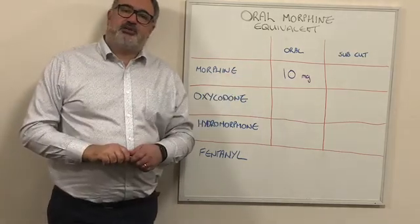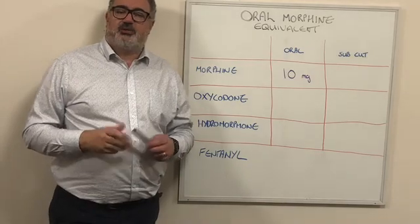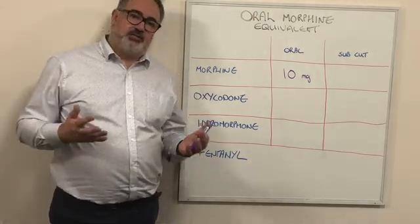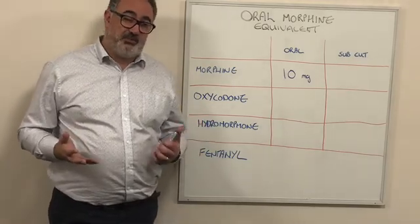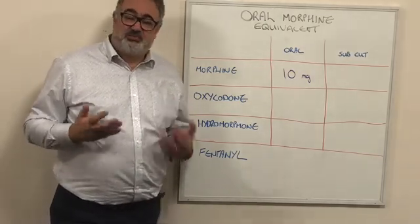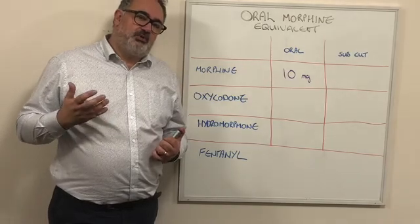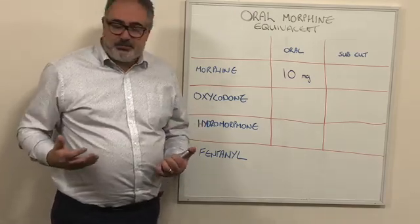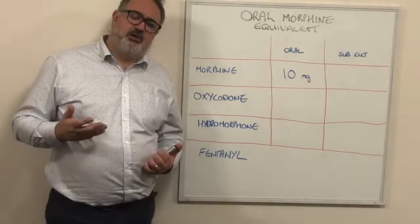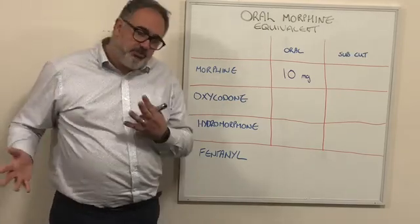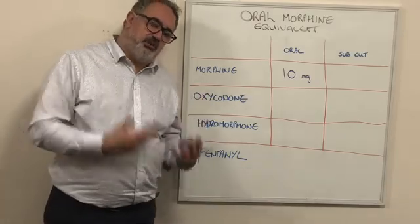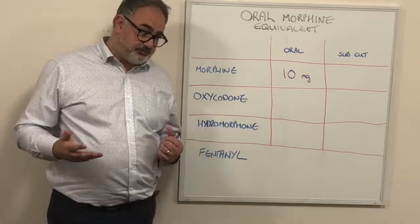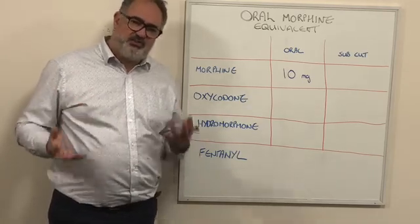Welcome to another short clip of palliative education. Today we're going to be talking about opioid conversion ratios. Having an understanding of conversion ratios in opioids is really crucial when looking after palliative care patients. Most of our patients are going to be on opioids of some description, and it's really common that we have to convert between opioids — whether because they're developing toxicity or to improve analgesic effect. It's really important to understand how opioids are converted and their levels of potency.